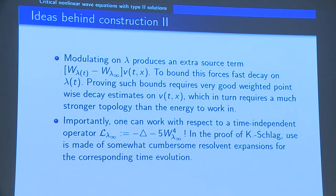So you get stability up to a co-dimension one set of W only if you work in a very, very strong topology. At the time we used resolvent expansions in which Schlag is an expert, but now we would rather use Fourier techniques, which would be somewhat simpler.